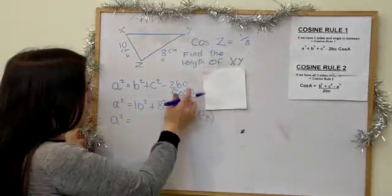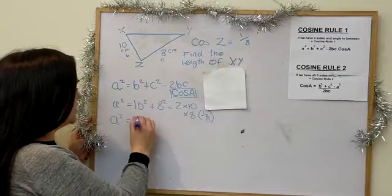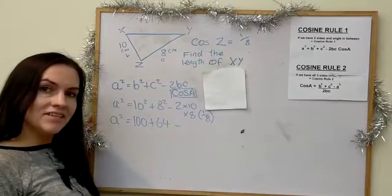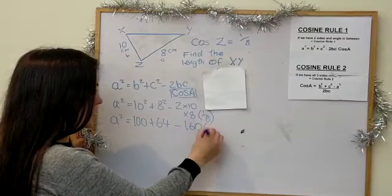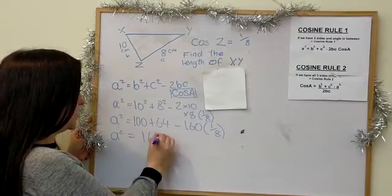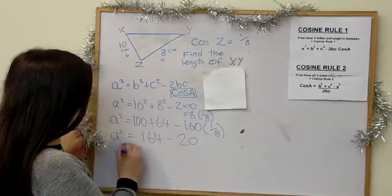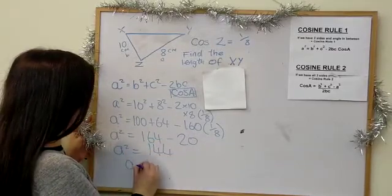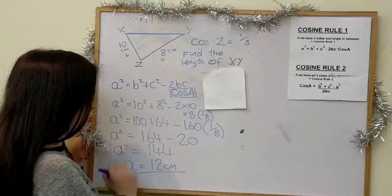Working it out: 10² = 100, plus 64, minus 2 × 10 × 8 = 160, and 160 × 1/8 = 20. So a² = 164 − 20 = 144, and a = √144 = 12. Therefore XY = 12 centimeters.